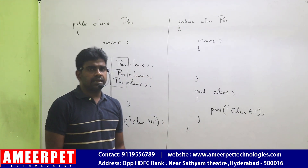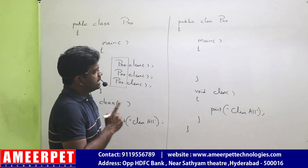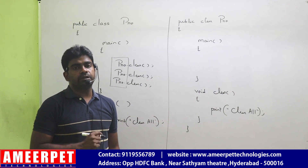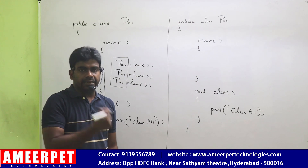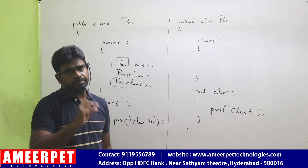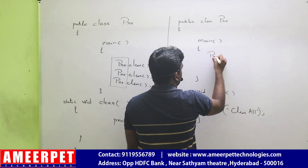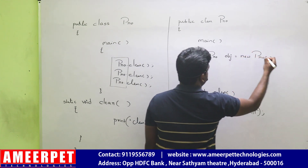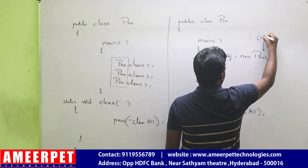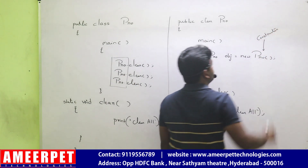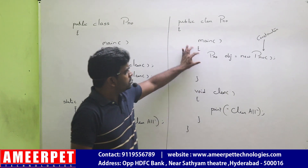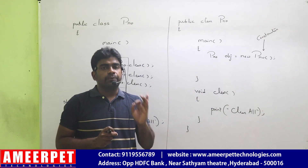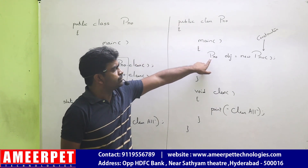But how can we access it? Can we access using the class name? Impossible. If you access directly pro.clear you will get an error. To access the instance methods, an object is required. How to define the object? I will explain briefly later how to create an object, but simply I'm giving a statement. We are creating an object for a class like this — class name, followed by object name.